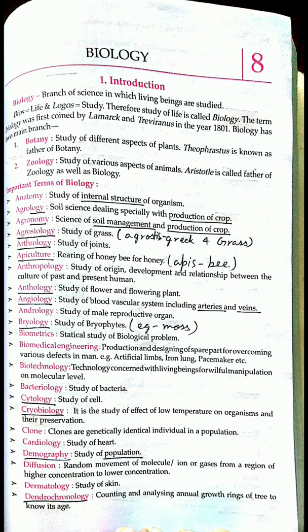Agro is related to agriculture and 'logy' means study, so agrology is the study of production of crops. The other one is agronomy. Agro means crop and 'nomy' means study of soil management and production of crops. So that is agronomy. There is a clear difference between agrology and agronomy.